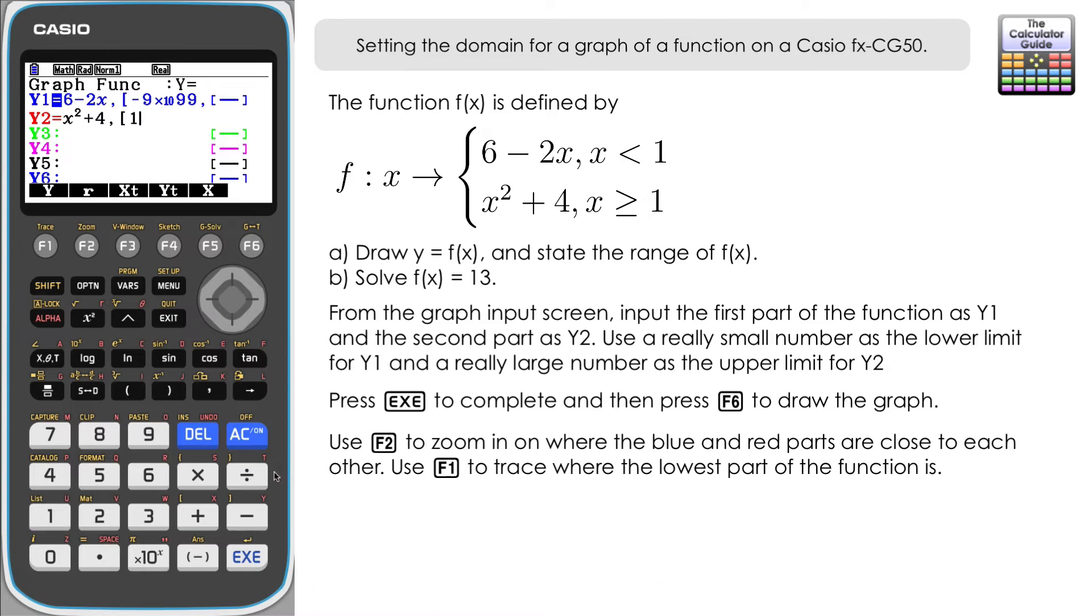So let's go for 9 times 10 to the 99. And then close the right square bracket there. We'll just leave it at that for the moment. So let's draw these.